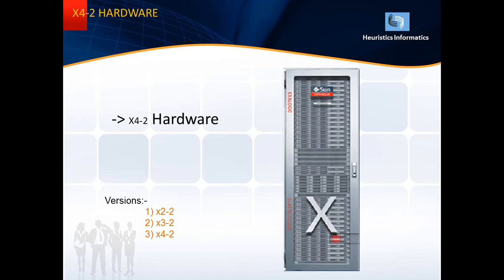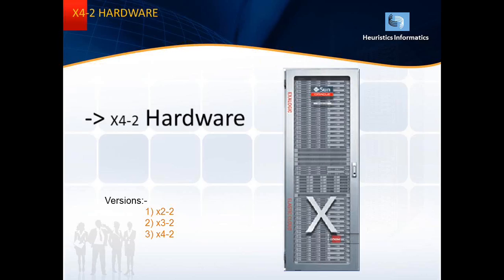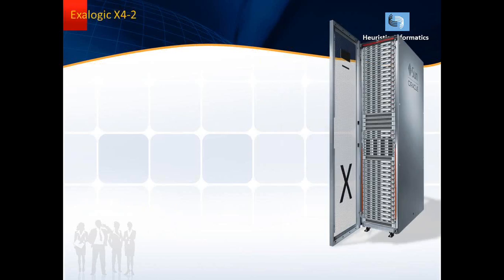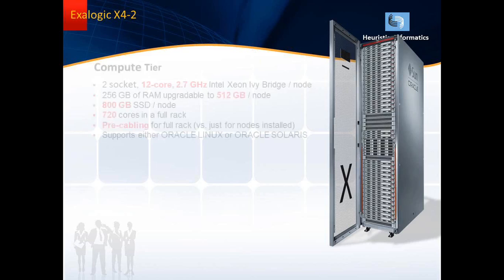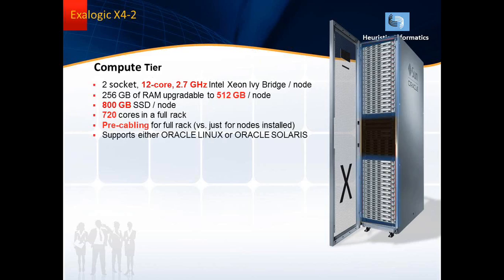Let's see all the components in the Elastic Cloud. The compute tier consists of compute nodes, where each compute node is a standalone physical server. Each compute node has two sockets with two Intel Xeon Ivy Bridge processors. Each processor has 12 cores, so 12 times 2 gives 24 cores per physical compute node.